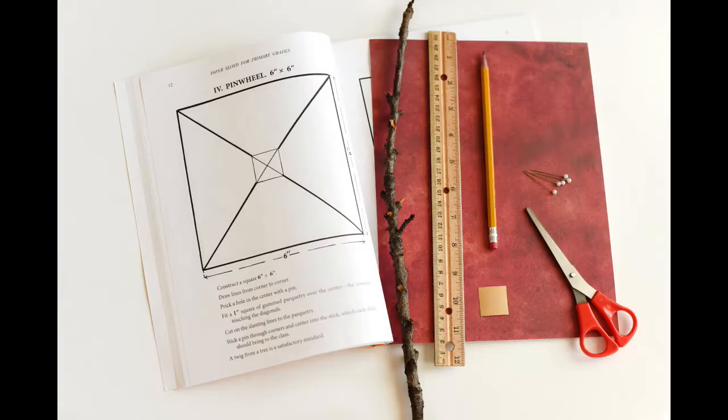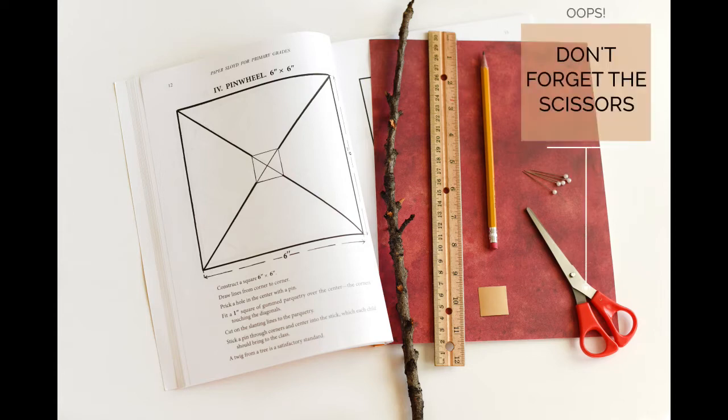The materials that we're going to need for this project are a piece of paper, the size isn't going to matter, a stick, a ruler, a pencil, a pin, and a one inch piece of sticker as well as an eraser which we've added later as a hack.